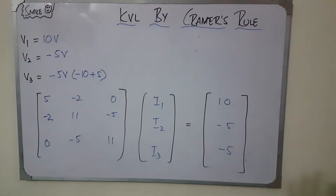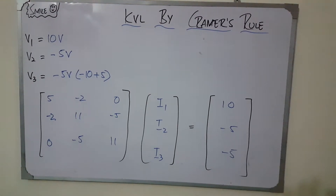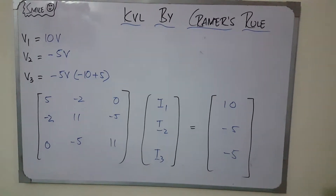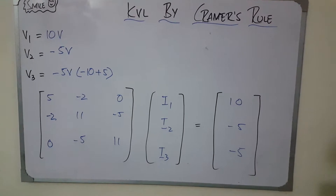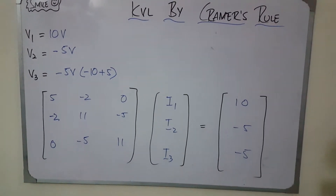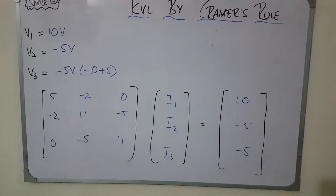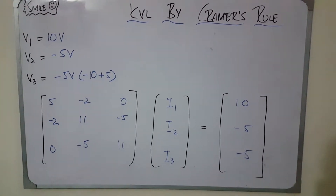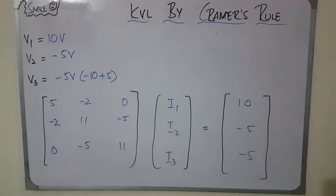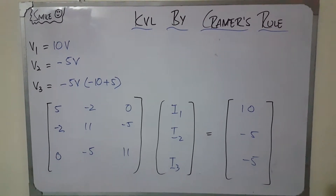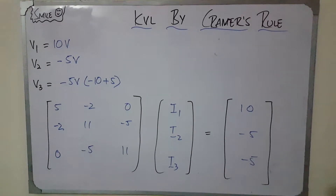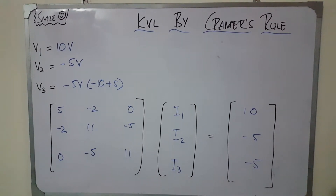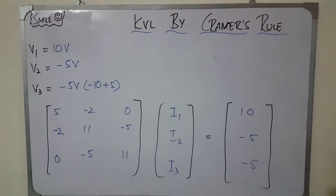Now, V1 equals 10 volts, V2 equals minus five volts, and V3 equals minus five volts — that comes from minus ten plus five. Going back to the circuit: V1 is simply 10 volts. V2 was five volts but becomes minus five because the current direction is from positive to negative, meaning the current is flowing oppositely, so it becomes negative.